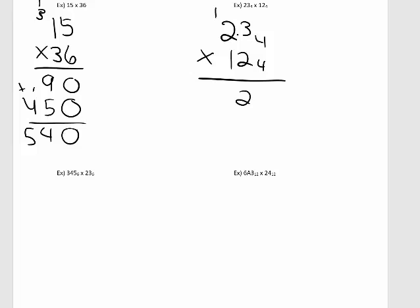2 times 2 is 4, plus 1 is 5. How many groups of 4 can I take from 5? That's 1 with a remainder of 1. So write the remainder and I'll write the 1. Now, 0 is a placeholder. I will now take 1 times 3, that's 3. And 1 times 2 is 2.